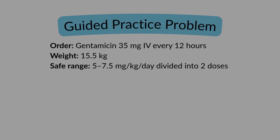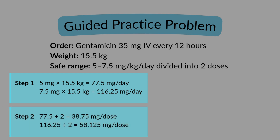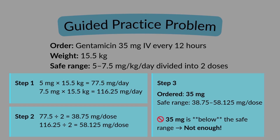Now let's walk through another example together — this one's a little trickier, so follow each step carefully. The provider orders gentamicin 35 milligrams IV every 12 hours. Your patient's weight is 15.5 kilograms. The safe range is 5 to 7.5 milligrams per kilogram per day, divided into two doses. Step one: multiply the weight by the low and high ends of the safe range to get your total safe daily dosage. Step two: since this med is ordered every 12 hours, divide that range by two. Step three: compare the ordered dose to the calculated safe range.